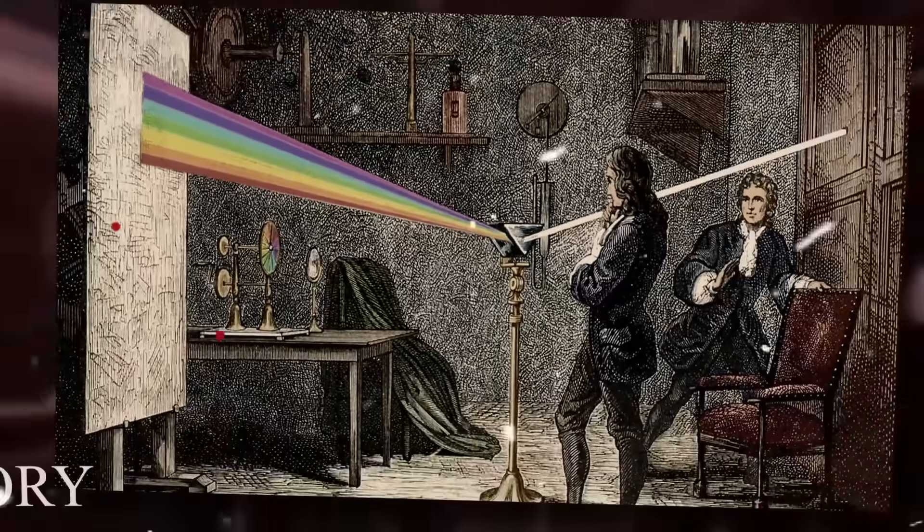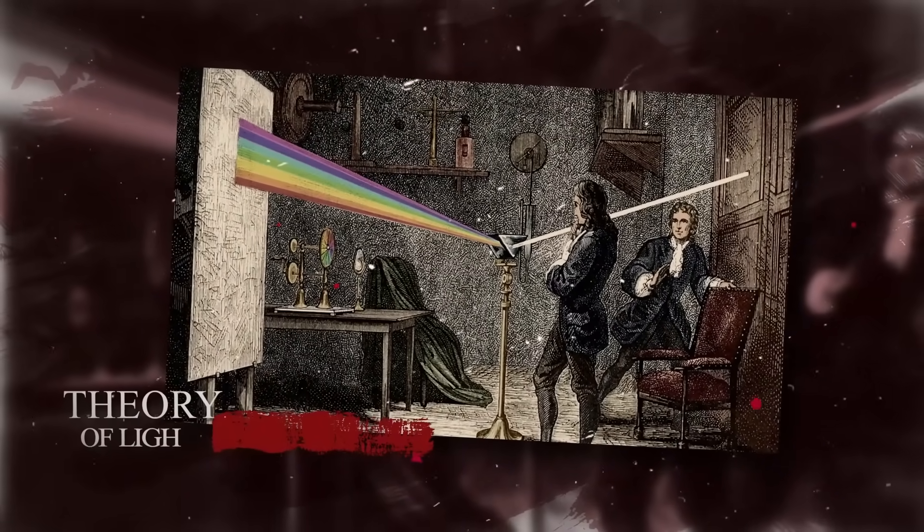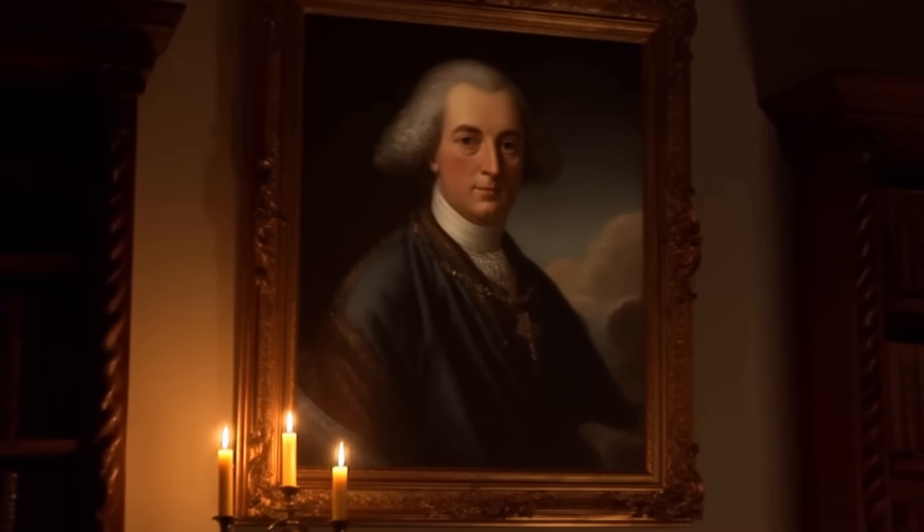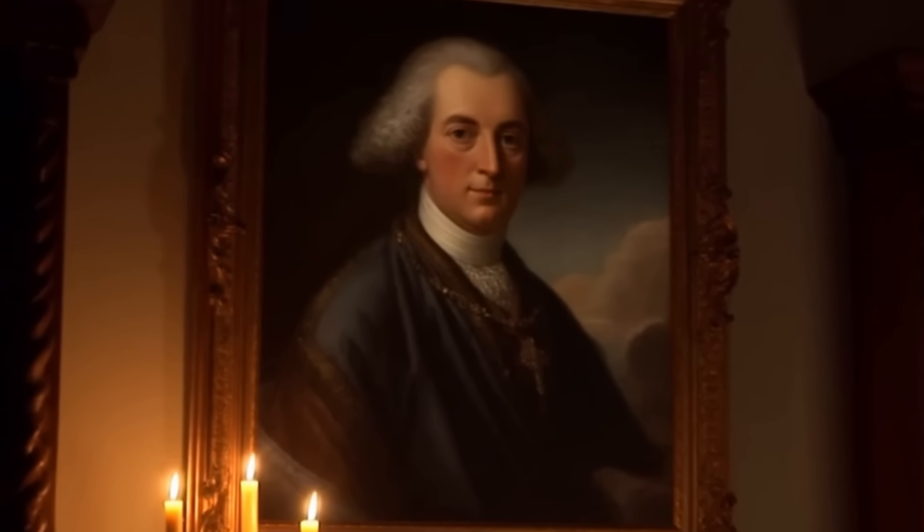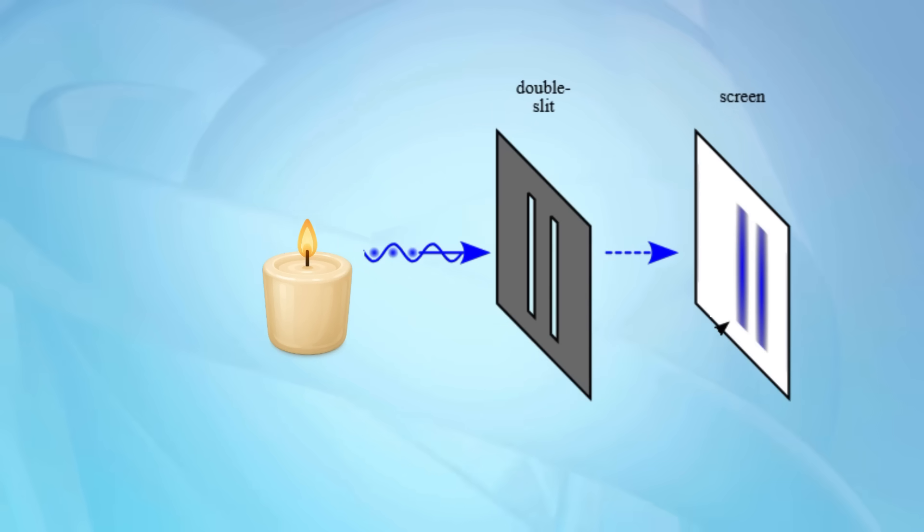It was 1801. For over a century, Newton's theory of light reigned unchallenged. Light, everyone believed, was made of particles, tiny, perfect corpuscles. To doubt Newton was to doubt science itself. But Thomas Young saw something the great man had missed. If light were made of particles, it would pass through one slit or the other, forming two bright spots on the screen. Simple. Predictable. But that's not what he saw.